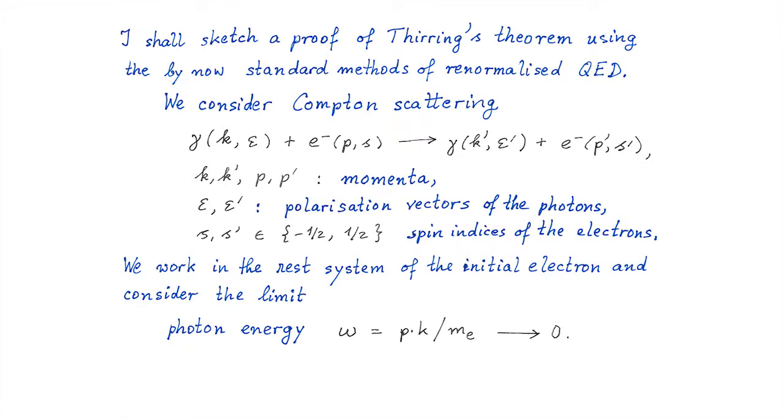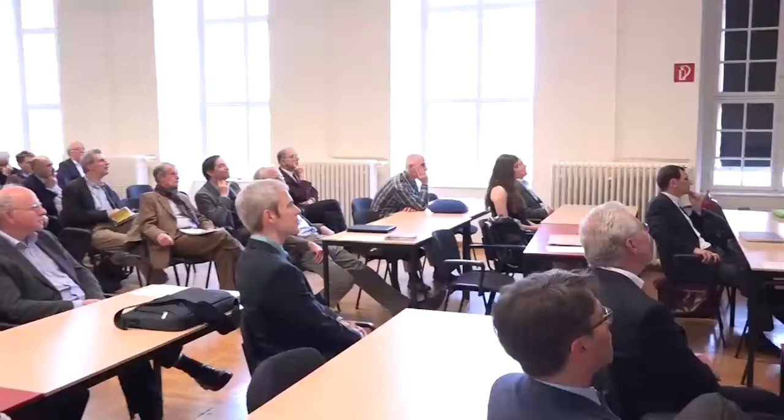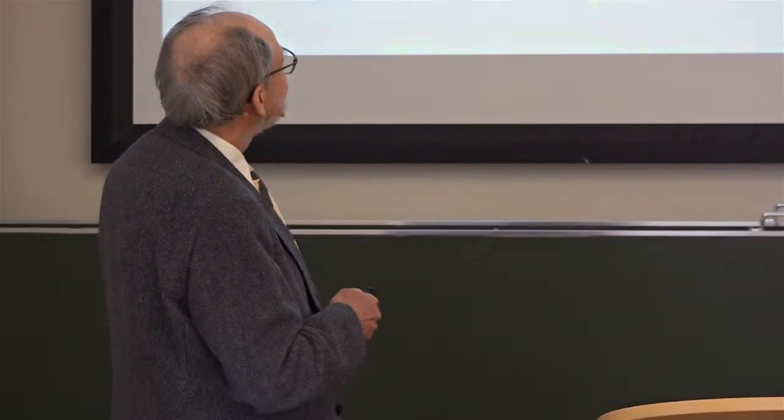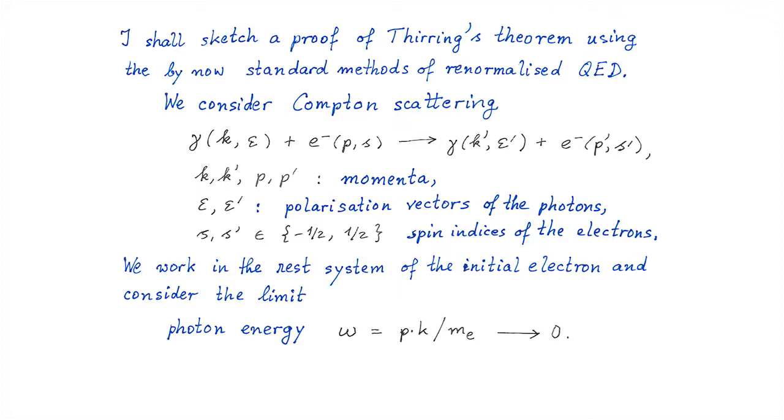Gamma plus electron goes into gamma electron. He showed that with photon energy omega going to zero, the classical result due to Thomson is correct to all orders. To my knowledge, this was the first low energy theorem derived in quantum field theory. I shall sketch a proof of Thirring's theorem using the, by now, standard methods of quantum electrodynamics. We consider Compton scattering. K, K prime, P, P prime are the momenta of the particles. Epsilon, epsilon prime, the polarization vectors of the photons.